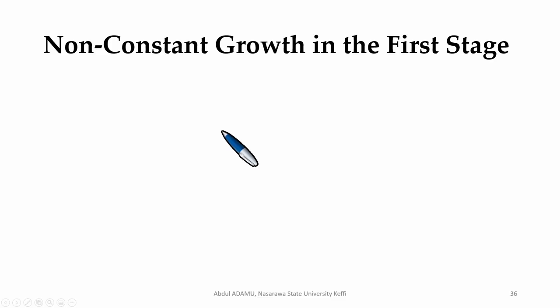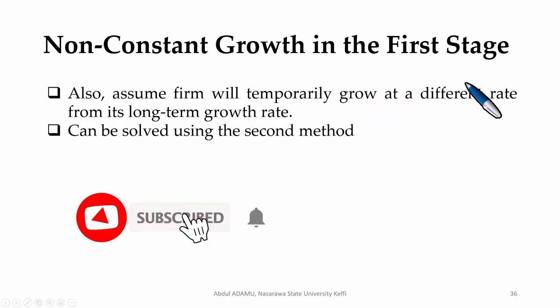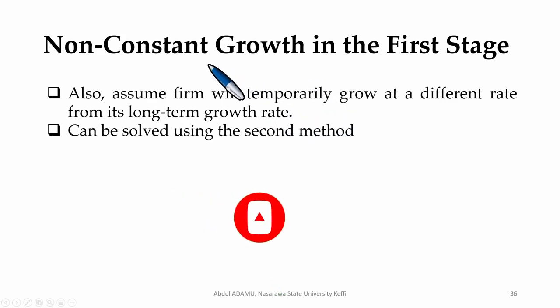The non-constant growth in the first stage assumes a firm with temporary growth grows at a different rate from its long-term growth. So the rate of growth will be different. Growth in the first year might be 10%. In the second year, it might be 15%. In the third year, it might be 5%. So the growth is different. Then later, it can maintain the same growth rate. That can be solved using the second method that I mentioned in the first part of this lecture.